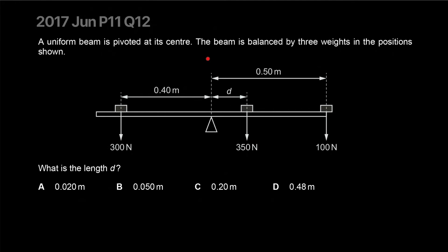A uniform beam is pivoted at its center. The beam is balanced by three weights in the position shown. There's one weight, there's this weight, and there's this weight. What is the length D? I need some more room for calculation. But let's try it out. This is moment caused by A. This means block A, block B, block C. So there's moment that is being caused by A, moment being caused by B, moment being caused by C.